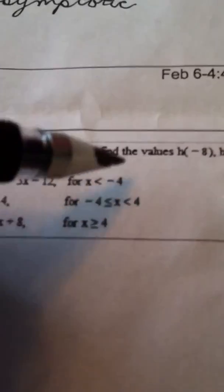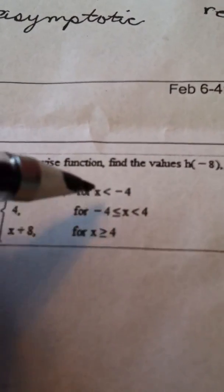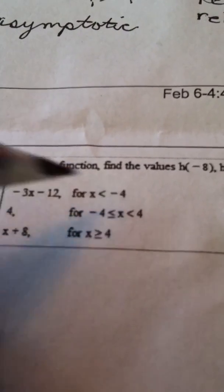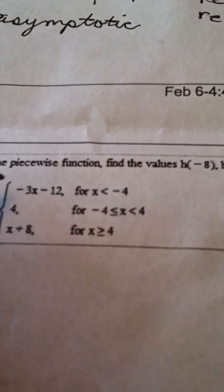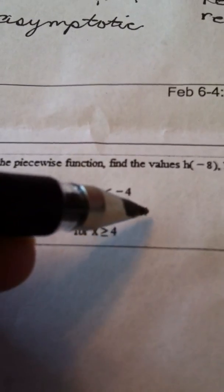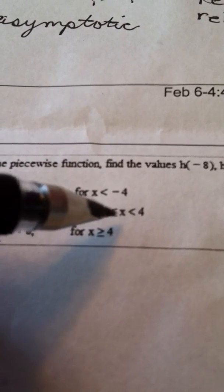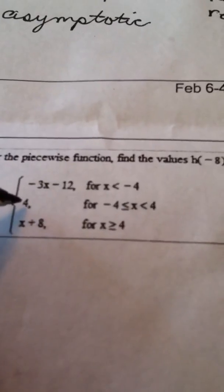Well, it all depends on what value you're putting in. So for any input value less than negative 4, this is the rule you use. For any input value between negative 4 and 4, equaling negative 4 but not 4, this is what you use.